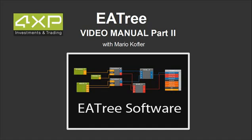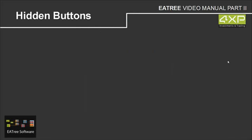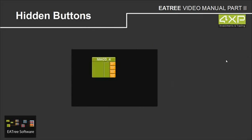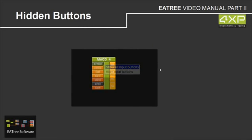In this chapter we are going to discuss the logic boxes. But first we start with hidden buttons. Each box has visible buttons and hidden buttons — these buttons are hidden to save disk space. To make them visible, just click with the right mouse button in the middle of a box and choose 'show all input buttons' and they appear.